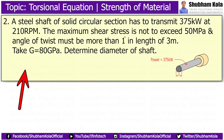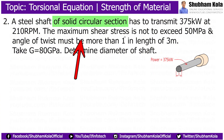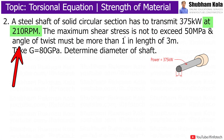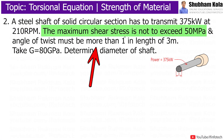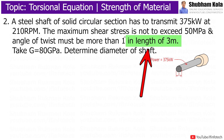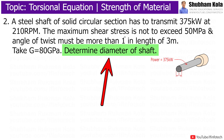For the next problem, the statement is: A steel shaft of solid circular section has to transmit 375 kW power at a speed of 210 rpm. The maximum shear stress is not to exceed 50 MPa and the angle of twist must not be more than 1 degree in a length of 3 meters. Take G, that is modulus of rigidity, as 80 GPa. Determine the diameter of the shaft.